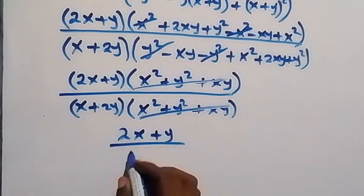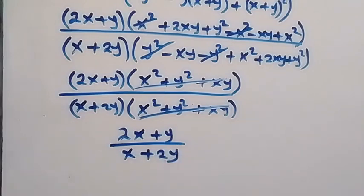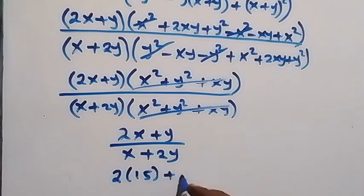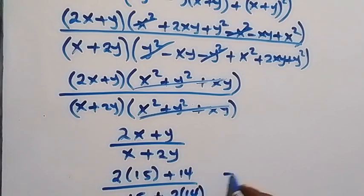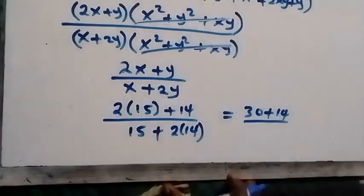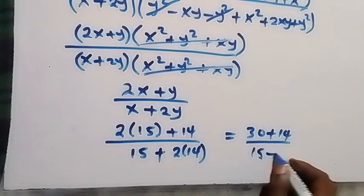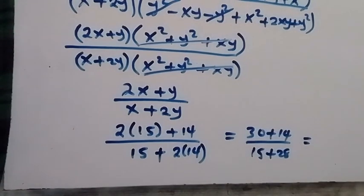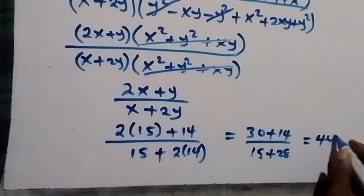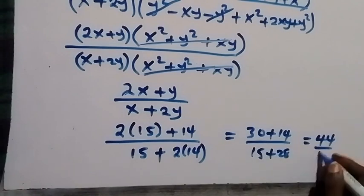Substituting back x equals 15 and y equals 14: the numerator is 2 times 15 plus 14, which is 30 plus 14 equals 44. The denominator is 15 plus 2 times 14, which is 15 plus 28 equals 43.